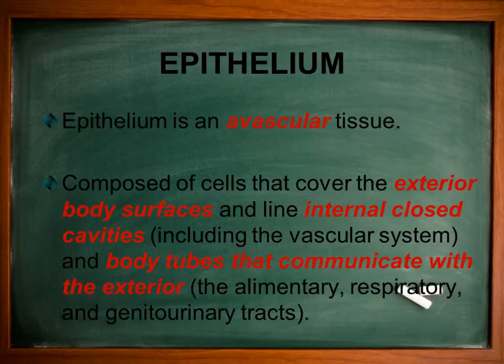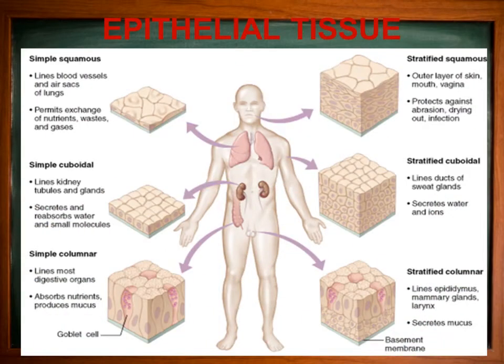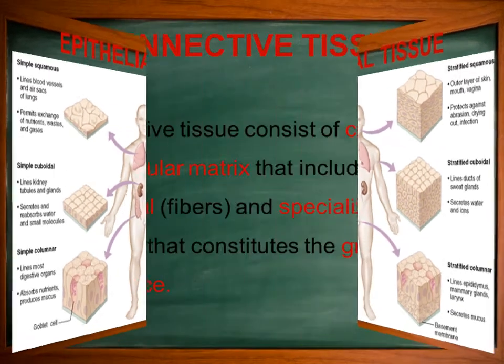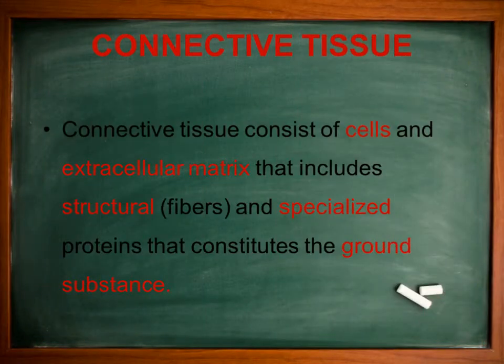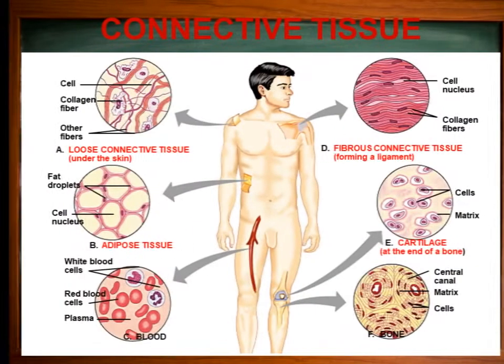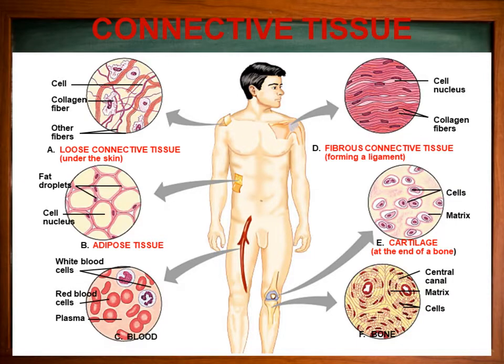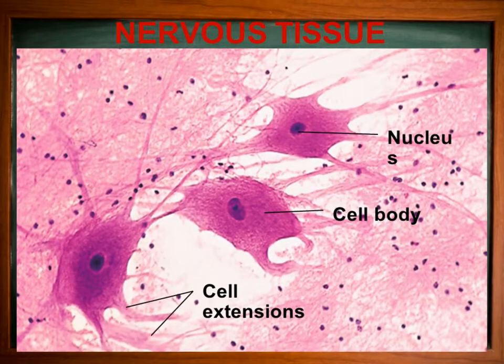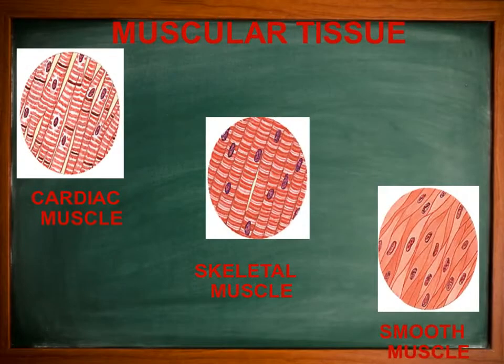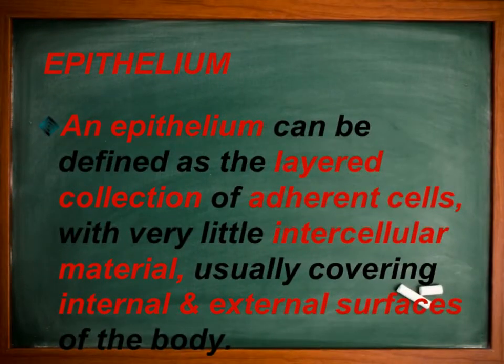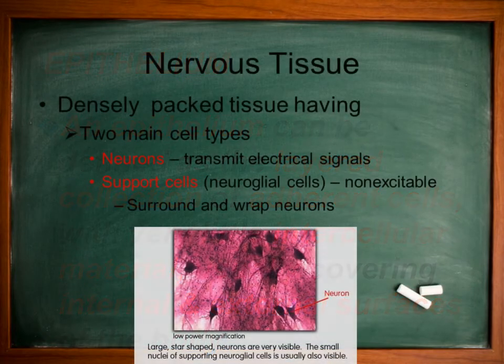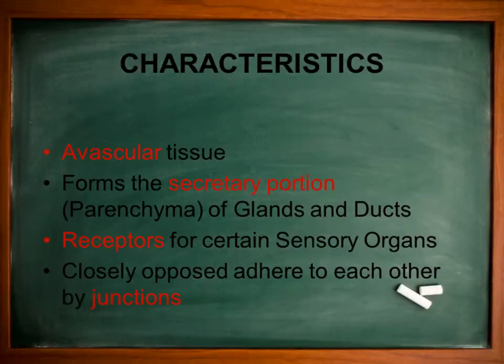Liver histology. Synthetic functions: plasma proteins, especially albumin — hypoproteinemia resulting in edema. Clotting factors: fibrinogen (1), prothrombin (2), 5, 7, 9, and 10 — hemorrhagic disorders. Enzymes such as alkaline phosphatase, SGOT, SGPT — increase in concentration due to release from damaged hepatic cells.